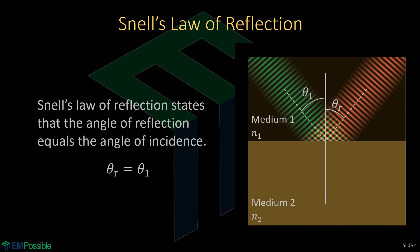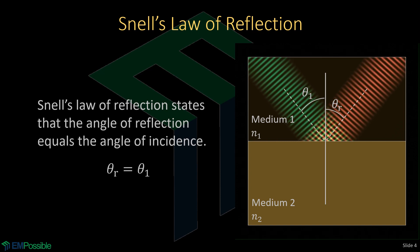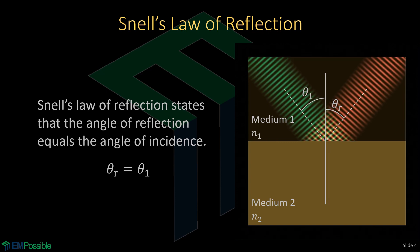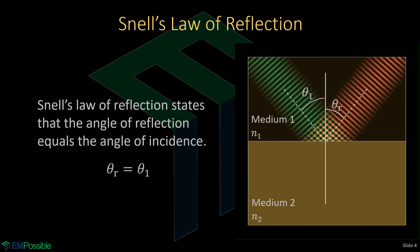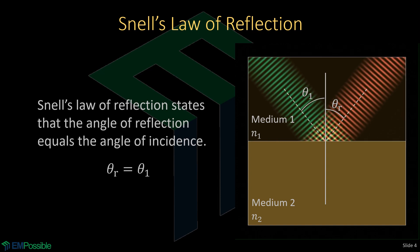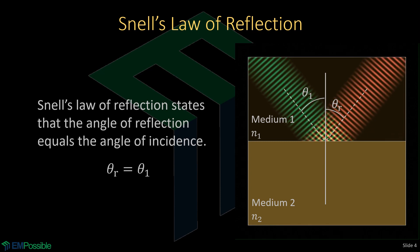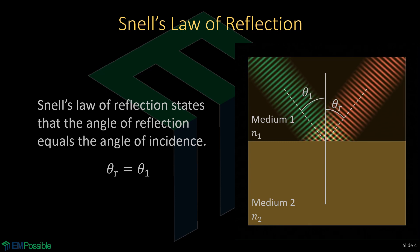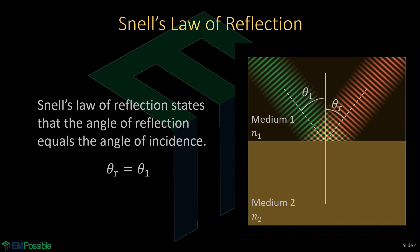Here's our first Snell's Law. The Snell's Law of Reflection says that the angle of reflection equals the angle of incidence. And this is pretty intuitive. Any of us have played billiards and you hit a ball against the cushion on the side, it bounces off at the same angle that it hits. So this makes a lot of sense.